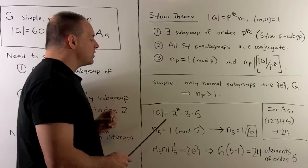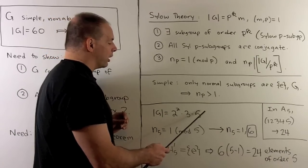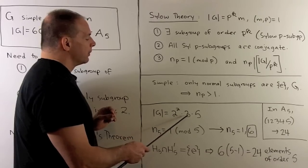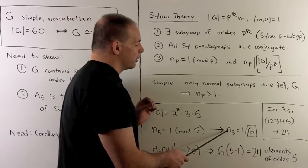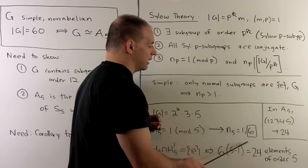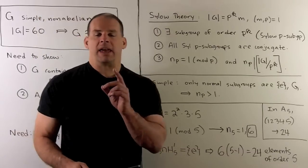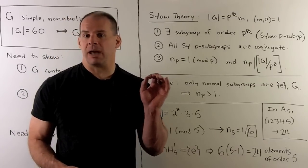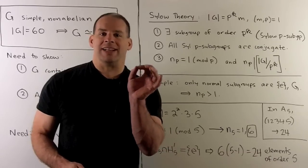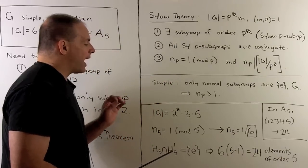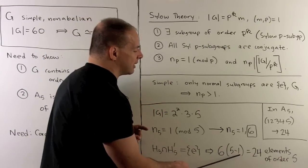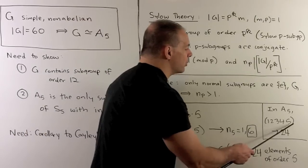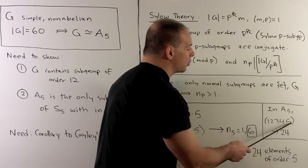If we take 60, we can write that as 2 squared times 3 times 5. Focusing on 5: the number of Sylow 5-subgroups is congruent to 1 mod 5 and must divide 2 squared times 3, which is 12. So the number of Sylow 5-subgroups is 1 or 6; it can't be 1, so we must have 6. Our Sylow 5-subgroups have 5 elements each, isomorphic to Z mod 5, and any two intersect only in the identity. So we have 6 times 5 minus 1 equals 24 elements of order 5. Comparing with A5, these are the 5-cycles, and 5 factorial divided by 5 gives 24.